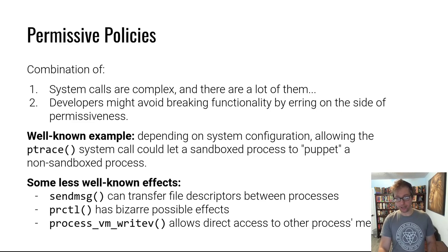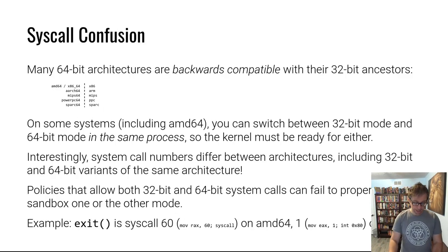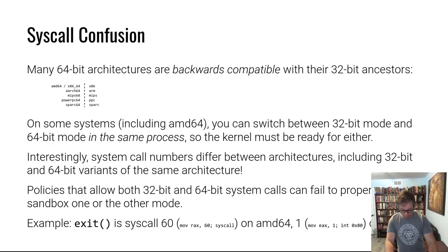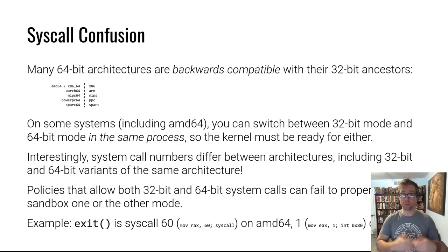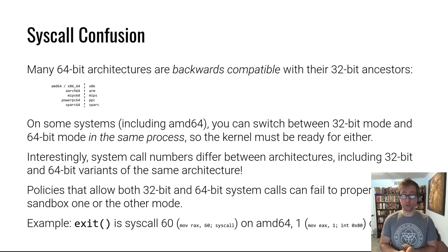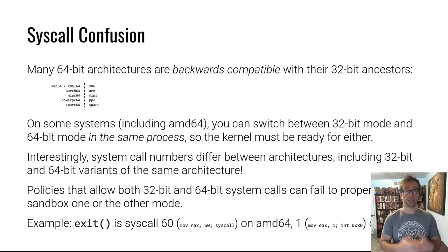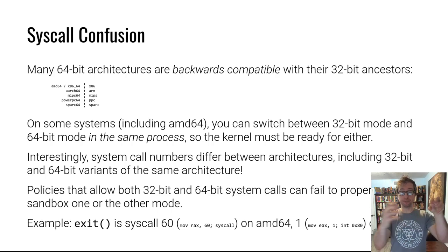Category number two: system call confusion. This stems from an interesting design decision. We've talked about how AMD made AMD64 backwards compatible with x86 — you can run x86 code basically unchanged with very few side effects. Most instructions still deal with 32-bit code and data by default; it's a prefix that makes them use 64-bit data.